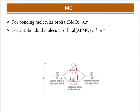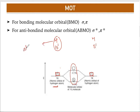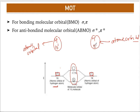Molecular orbitals form by the combination of atomic orbitals, which can be represented as circles or boxes. For example, hydrogen has only one orbital — 1s — with one electron, and another hydrogen also has a 1s orbital with one electron. These are the atomic orbitals. When two 1s orbitals combine, they have the same energy — confirming the first point.